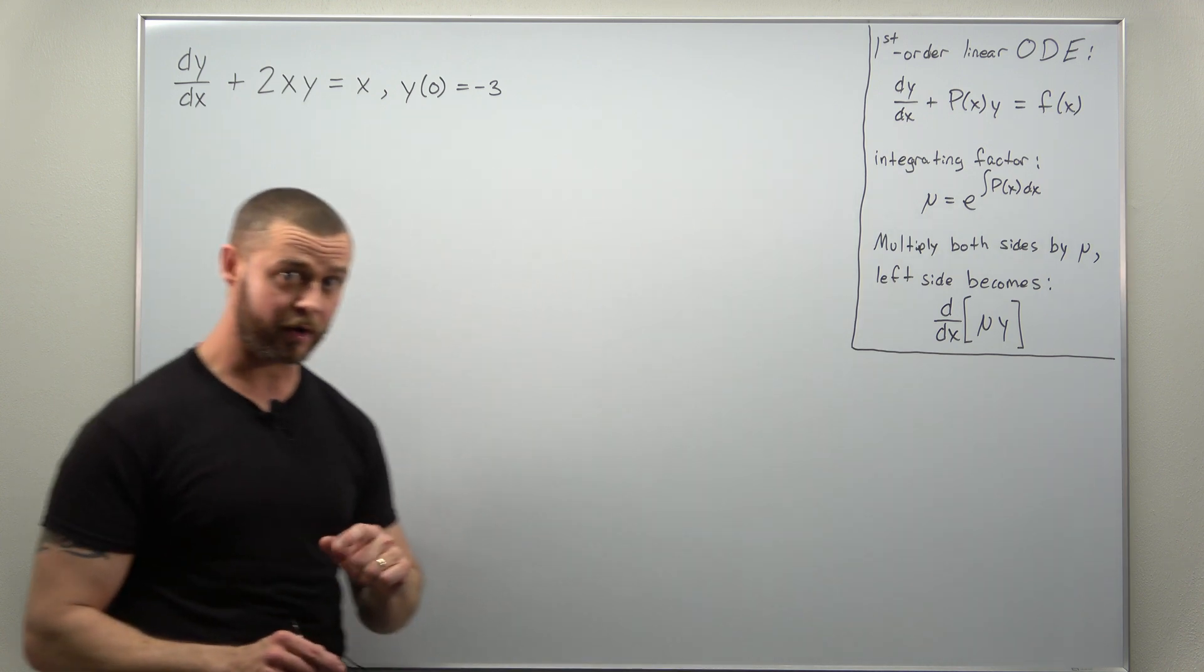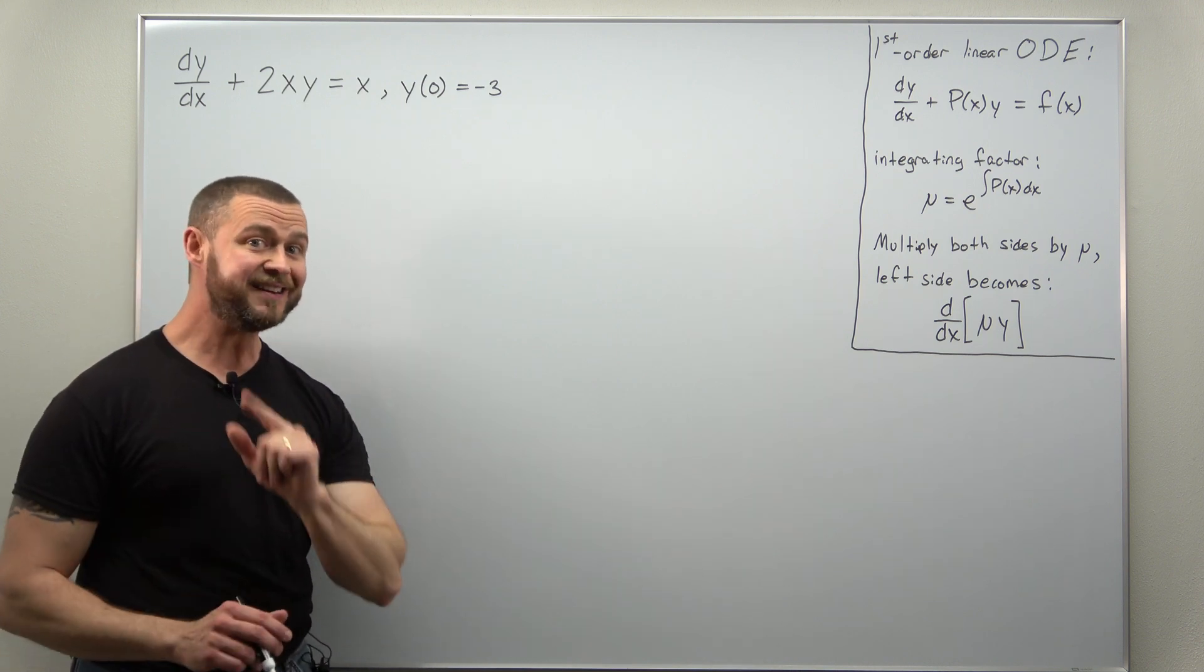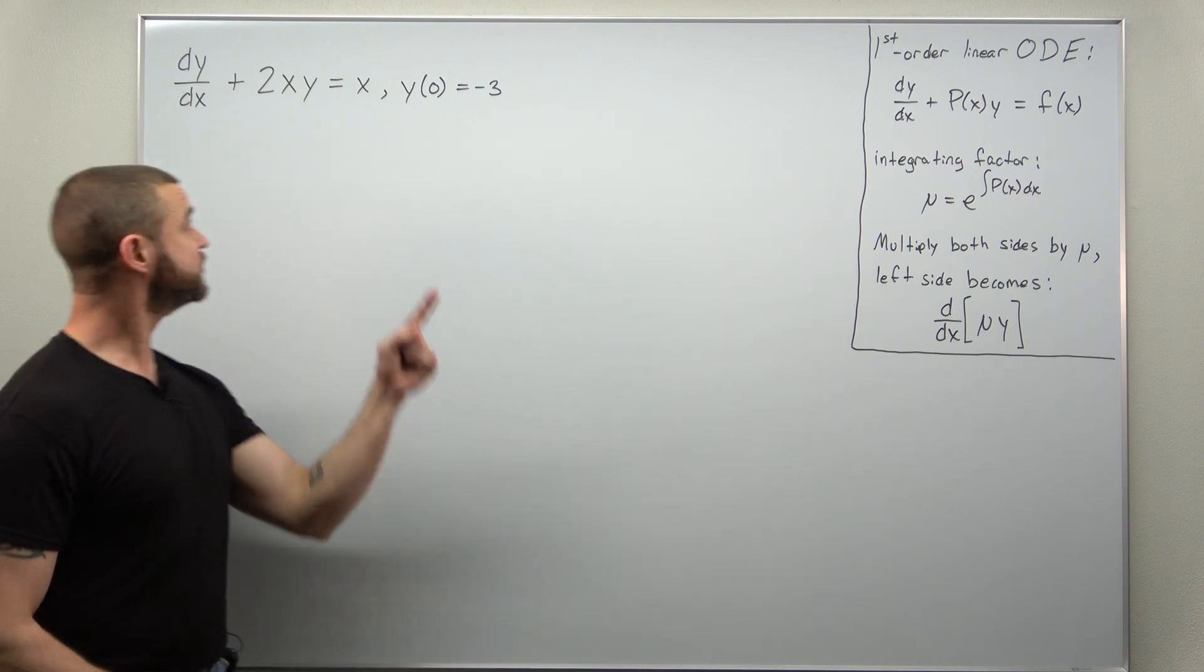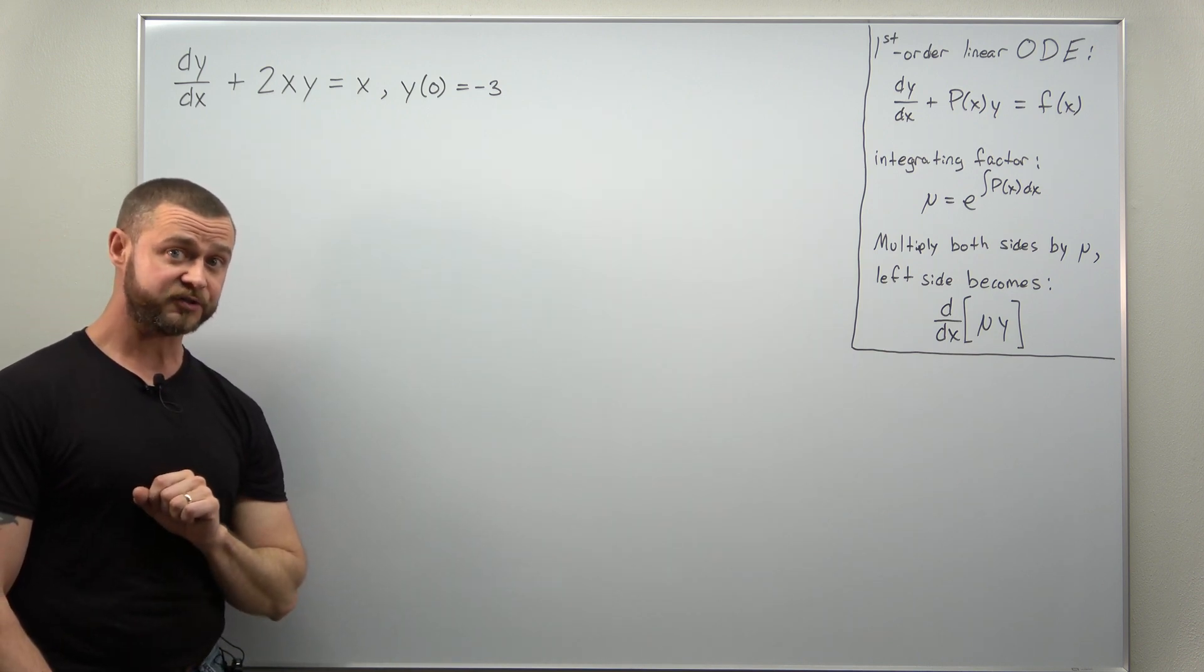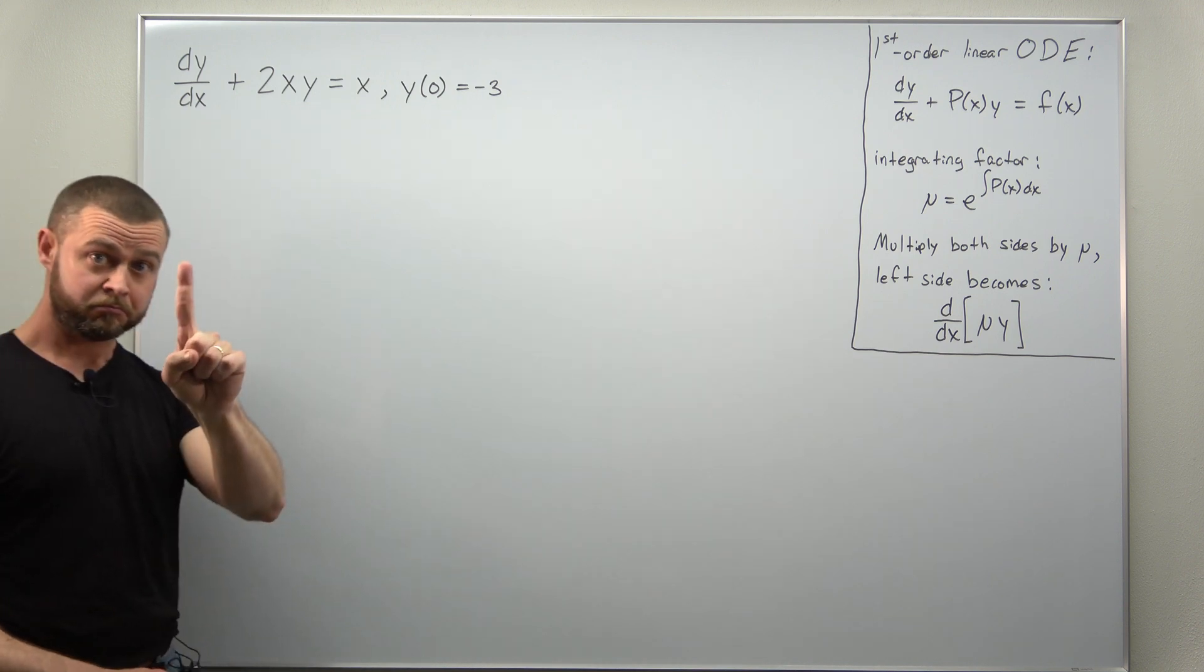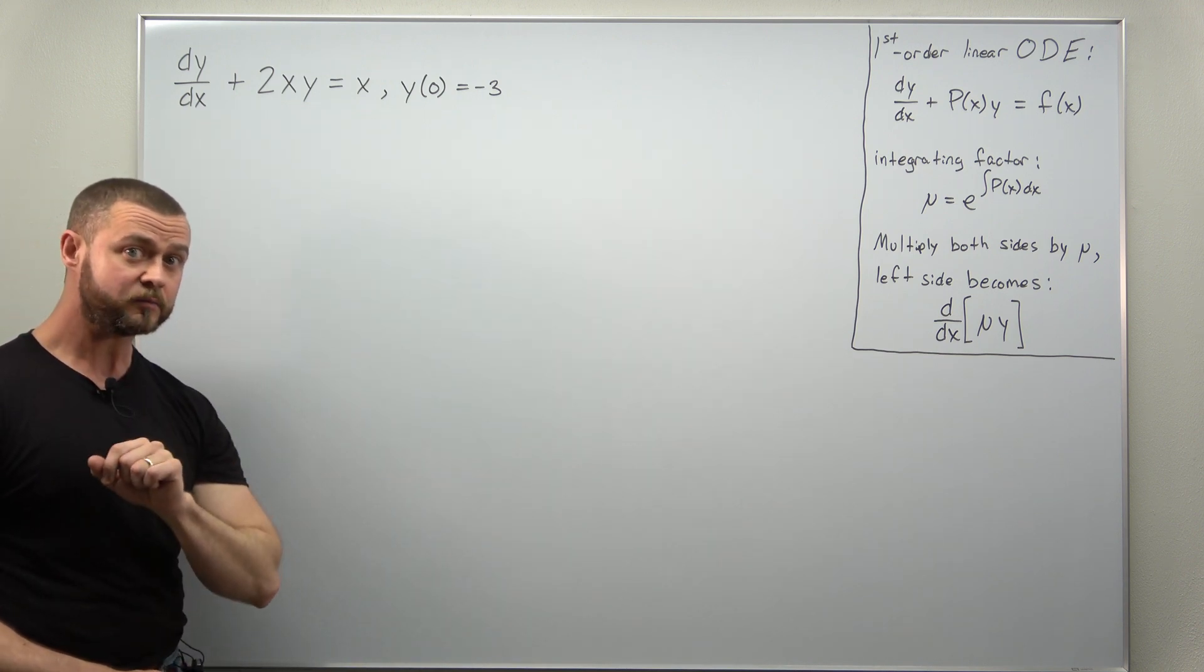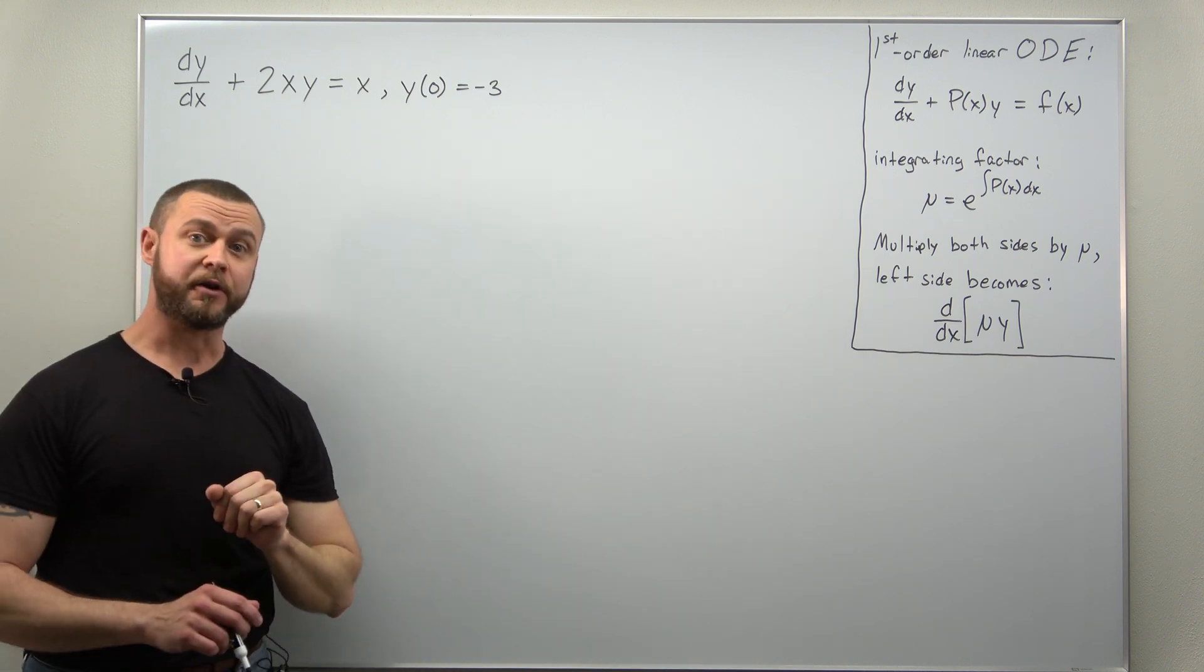We're going to start solving this one by noticing the differential equation is already in linear form. First, y and its derivative are raised to first powers. Second, in front of the derivative term there's only a coefficient of one, and on the right side there's no y terms.